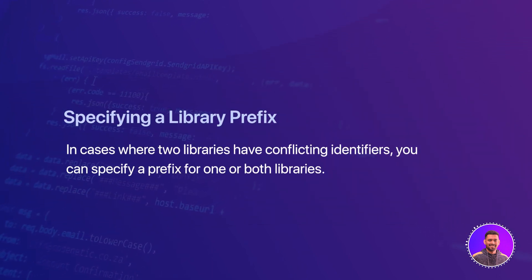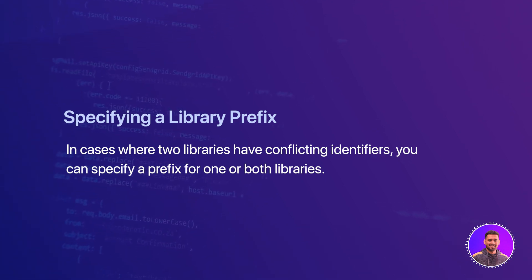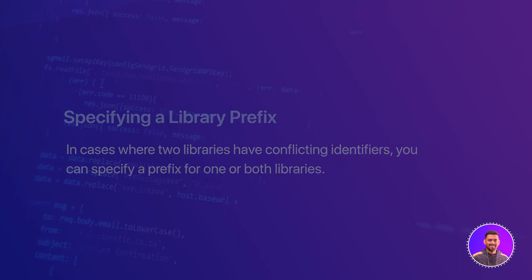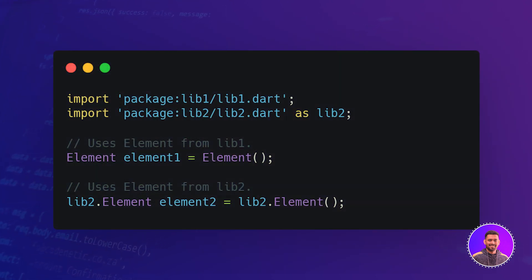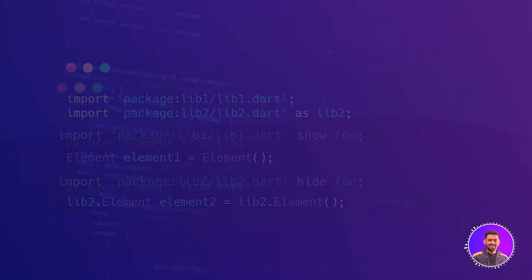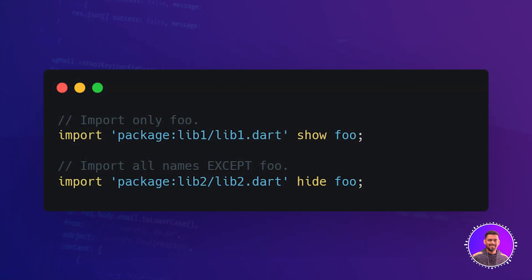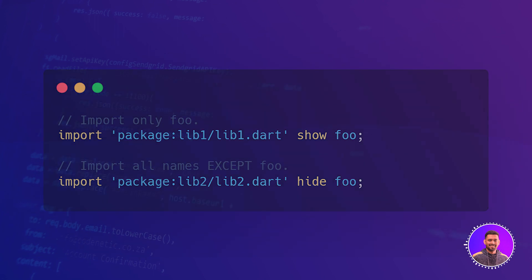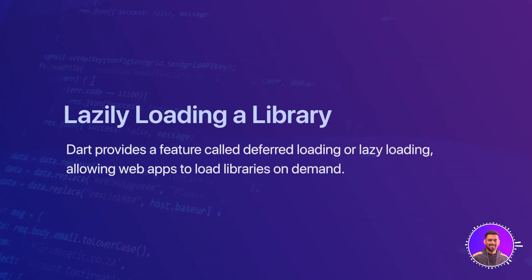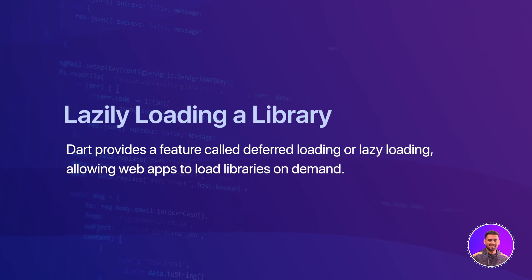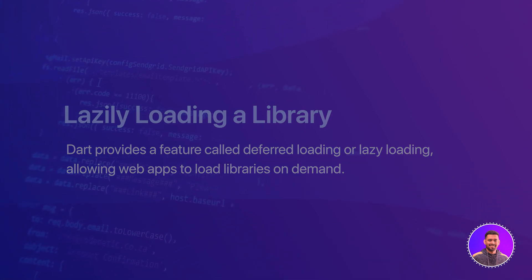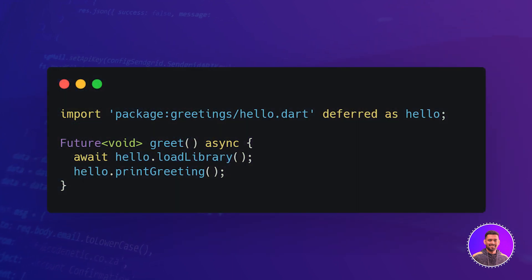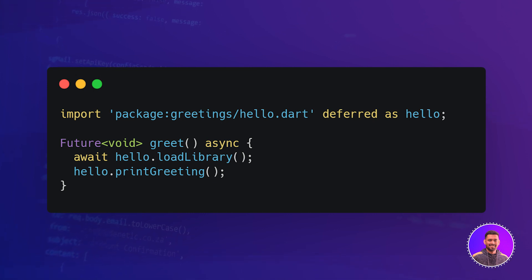In cases where two libraries have conflicting identifiers, you can specify a prefix for one of the libraries. You can also separately import part of a library using show and hide. Dart provides a feature called deferred loading — also known as lazy loading — which allows web apps to load libraries on demand. The loadLibrary function loads the library when needed and the await keyword pauses execution until it's loaded.